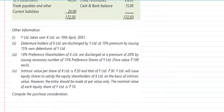Y Limited takes over X Limited on 10th April 20X1. The debenture holders of X Limited are discharged by Y Limited at a 10% premium by issuing 15% debentures of Y Limited. The 14% preference holders of X Limited are discharged at a premium of 20% by issuing the necessary number of 15% preference shares of Y Limited, with a face value of rupees 100 each. The intrinsic value per share of X Limited is rupees 20, and that of Y Limited is rupees 30. The question is to compute the purchase consideration.